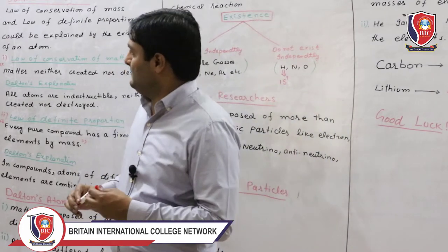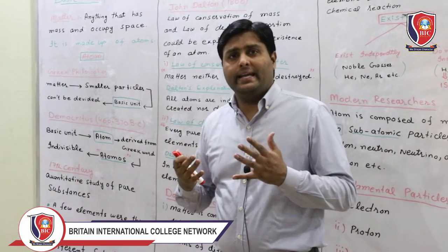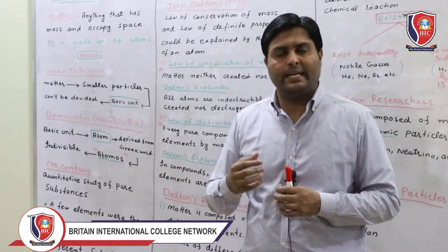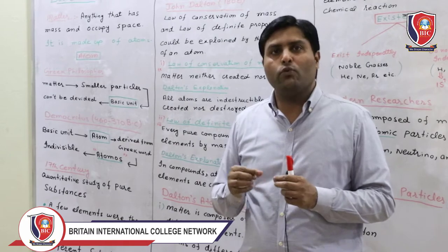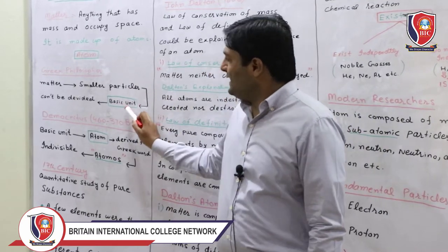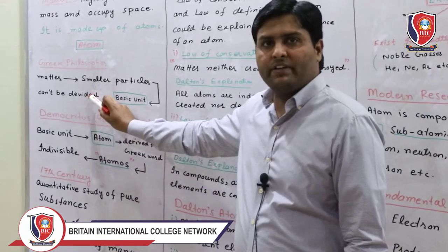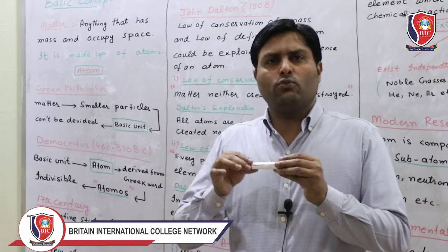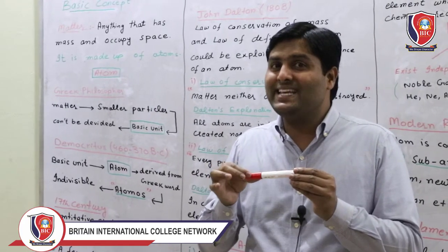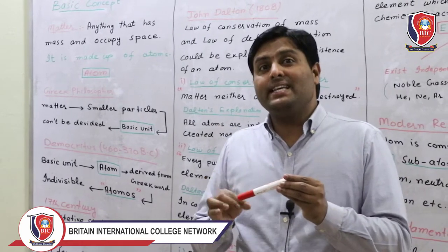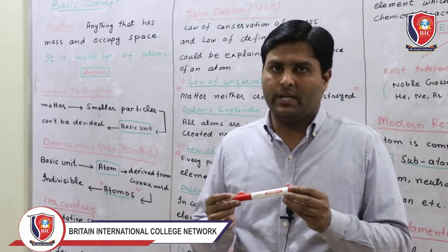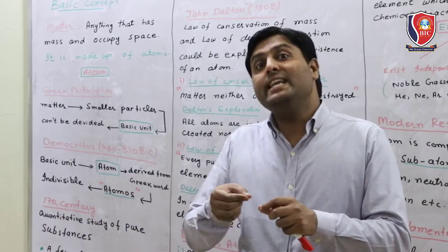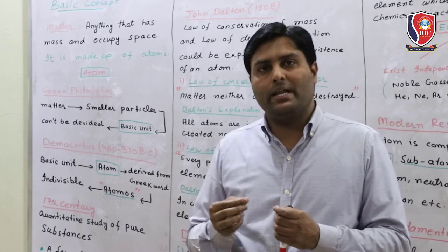Chapter 1 starts from the atom. What is the atom? There are different theories. First of all, we have Greek philosophers — the Yunani philosophers. They said that matter could be divided into smaller and smaller particles to reach a basic unit which cannot be further subdivided. For example, if I tell you this is a board marker and you keep breaking it, you will eventually reach a point where you cannot break it further. The Greek philosophers said that it has a basic unit.